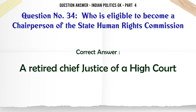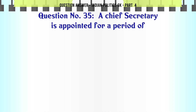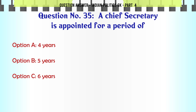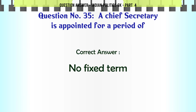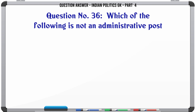Chief Secretary is appointed for a period of: A. Four years. B. Five years. C. Six years. D. No fixed term. The correct answer is no fixed term.